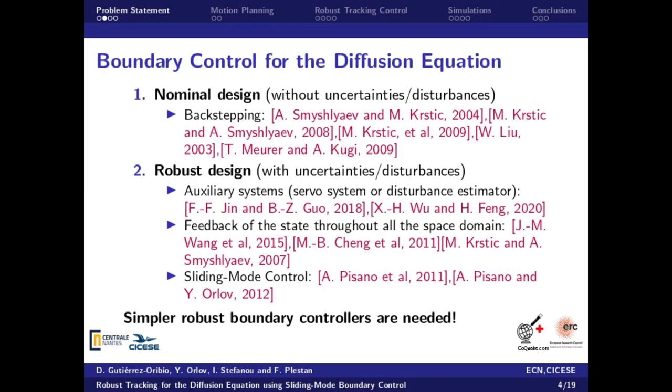Inside the robust design examples, there exist works that require actuary systems or the measurement of the state throughout all the space domain. Therefore, simpler robust boundary controllers are needed.